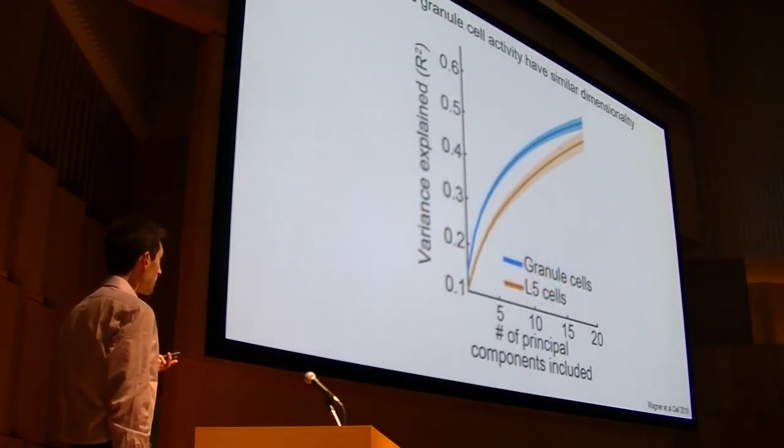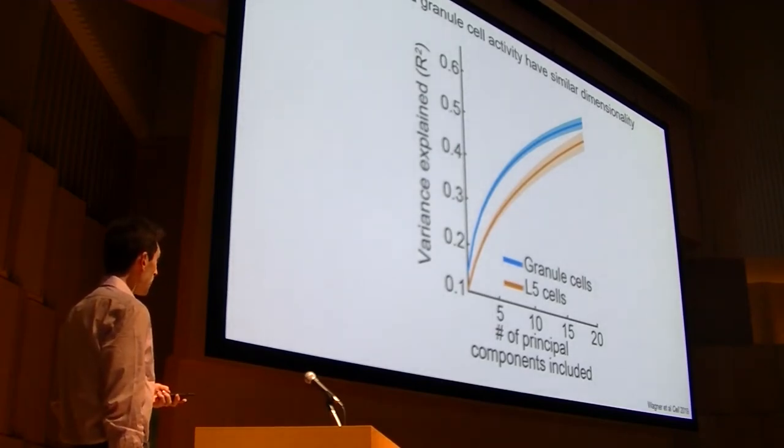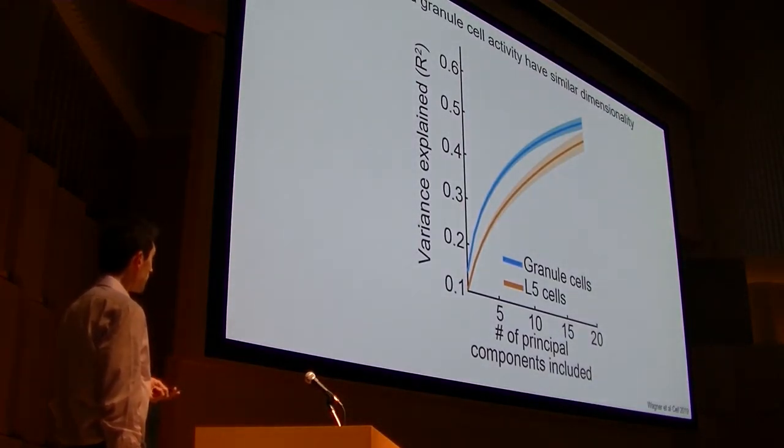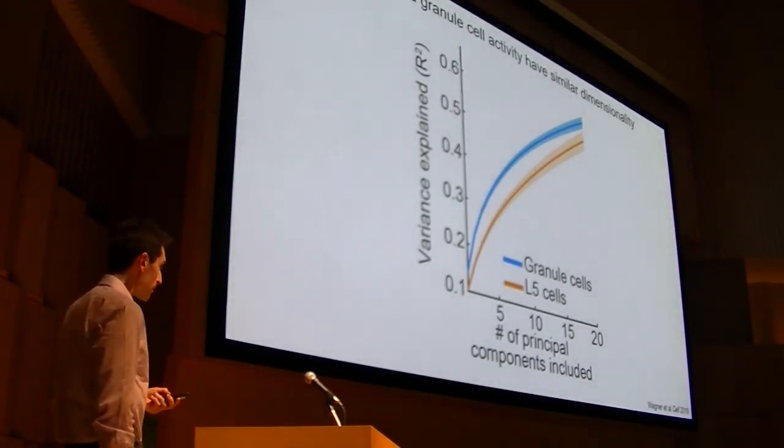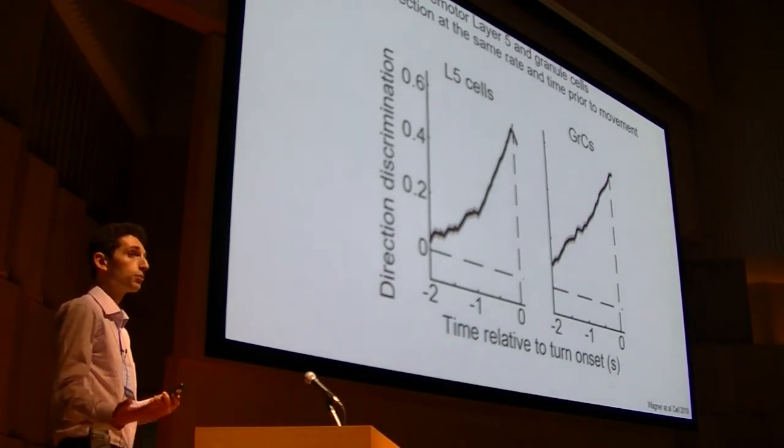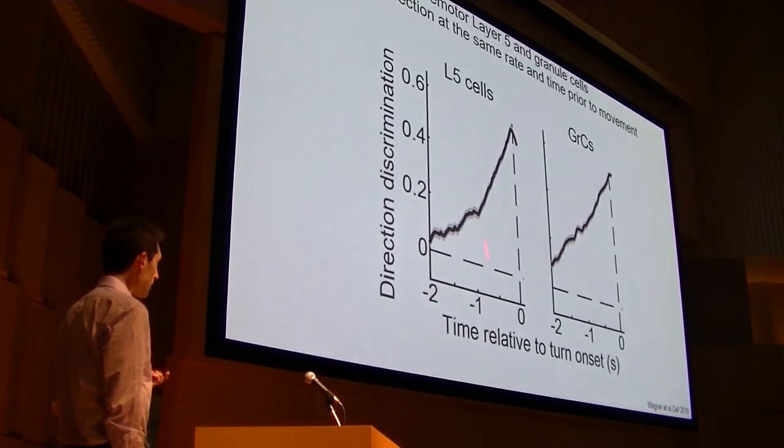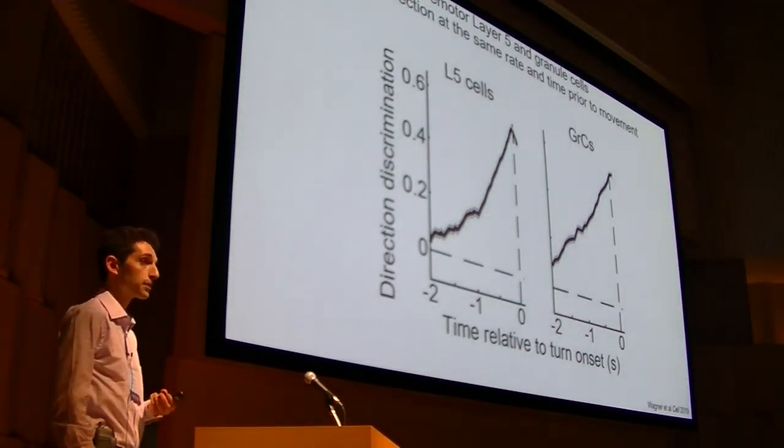So when we used a more sort of unbiased quantification of the overall amount of diversity of neural responses in the layer five ensembles and the granule cells, by just performing principal components analysis and concatenating single-trial activity across the entire imaging sessions, what we found is that the variance explained as a function of number of principal components included rose at basically the same rate, or perhaps even a bit faster in the granule cells than the layer five cells, indicating that there's really no difference in the sort of total response diversity in these ensembles. And the last thing we did was to look at sort of the buildup of predictive information about the upcoming turn direction prior to the turn onset itself. And when we looked at that, basically this information builds up at the same rate and at the same time in these two ensembles. So this is the sort of gross high-level representational comparison of two ensembles that have really a lot in common.